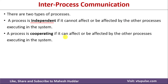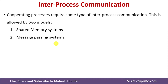The second type of process is known as Cooperating Process. A process is cooperating if it can affect or gets affected by other processes executing in the system. Whenever we have cooperating processes in a system, we need to establish some Inter-Process Communication strategy so that they can share the information.